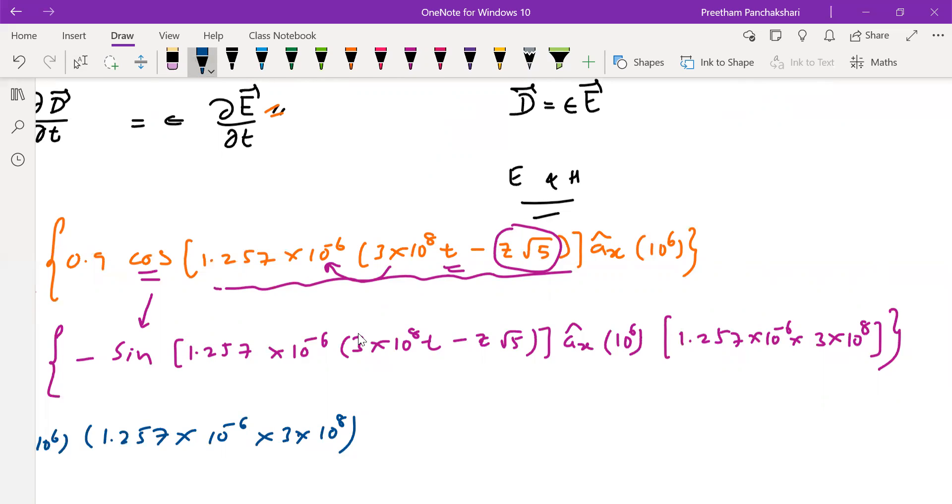Now what is left is only sin: sin(1.257×10⁻⁶ × 3×10⁸t - z√5)âₓ. So this is the complete Jd, that is displacement current density.